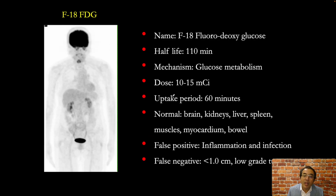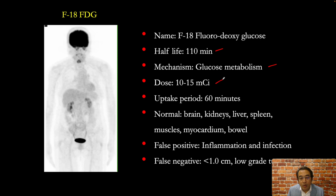The radiopharmaceutical name is F18 fluorodeoxyglucose. The half-life of F18 is 110 minutes. FDG is taken up by glucose metabolism. We inject about 10 to 15 millicuries intravenously, wait for about 60 minutes, and then scan the patient. We see intense activity in the brain, excretion from the kidneys, faint activity in the liver and spleen — the spleen is normally less intense than the liver — and there may be some activity in the muscles, myocardium, and bowel, which is very variable.